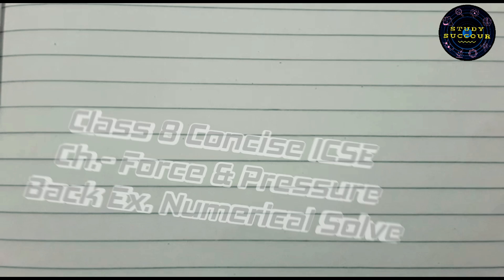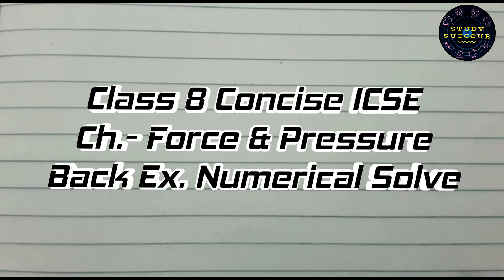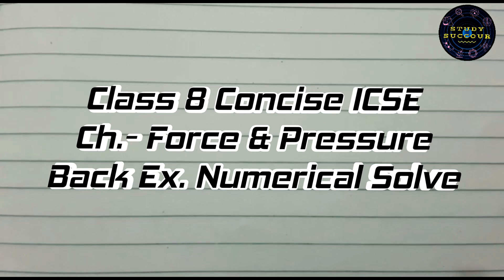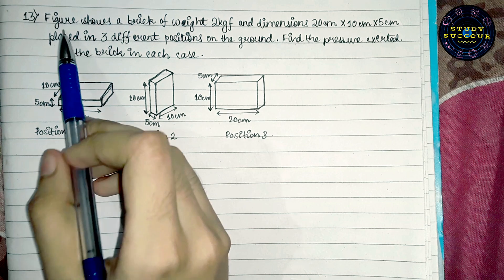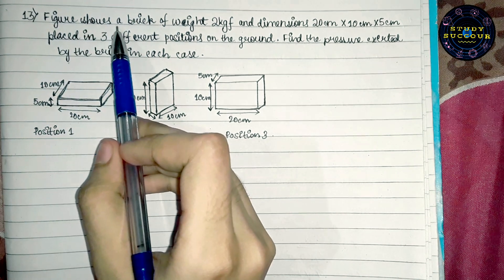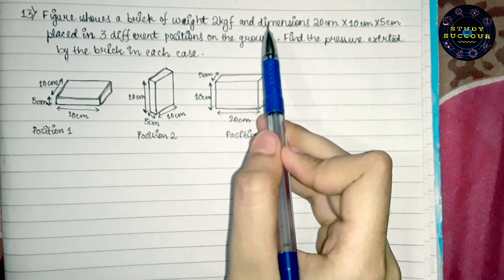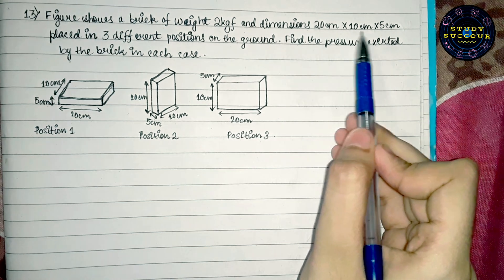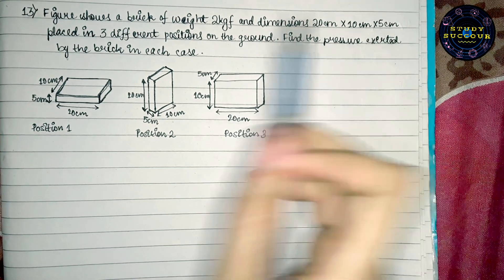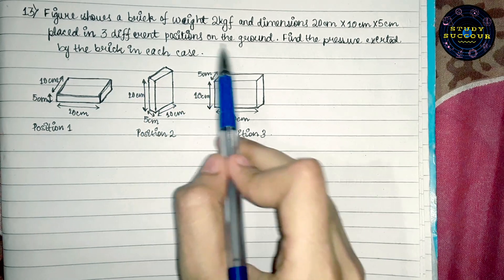Let's have a look at this very interesting question from class 8 ICSE Concise book, chapter Force and Pressure, back exercise question number 13. The question says: The figure shows a brick of weight 2 kg force and dimensions 20 cm x 10 cm x 5 cm placed in 3 different positions on the ground.